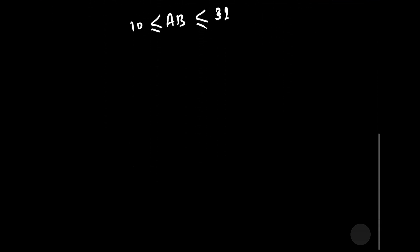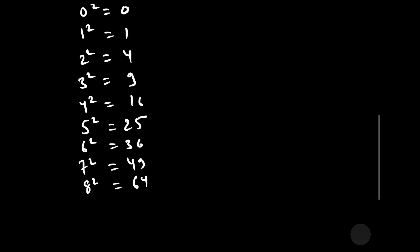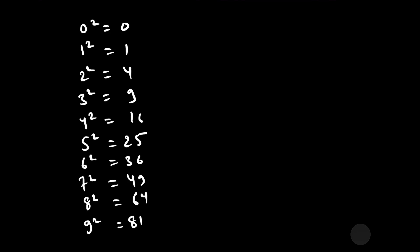Let us observe the unit digit squares: 0²=0, 1²=1, 2²=4, 3²=9, 4²=16, 5²=25, 6²=36, 7²=49, 8²=64, 9²=81. Since (AB)² = CCB, the unit digit of AB is B and the unit digit of CCB is also B, so the unit digit must repeat after squaring.